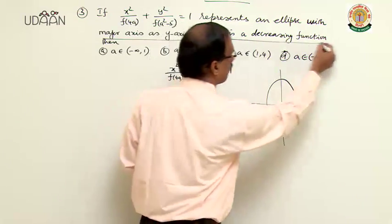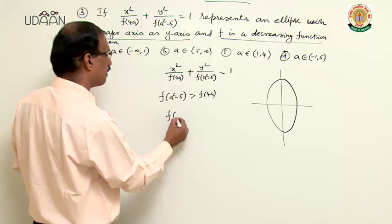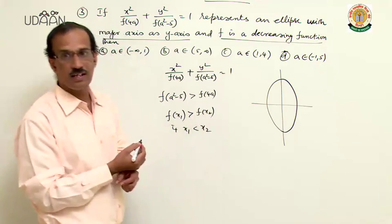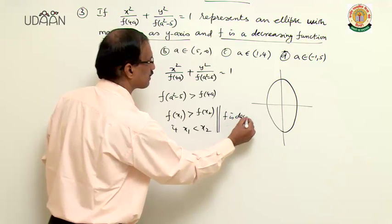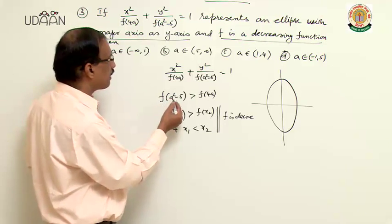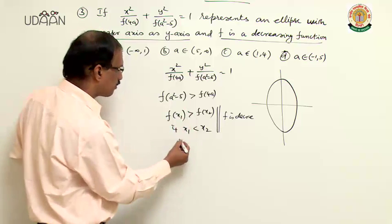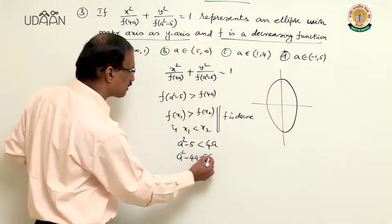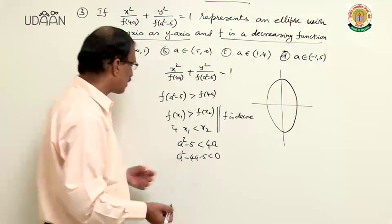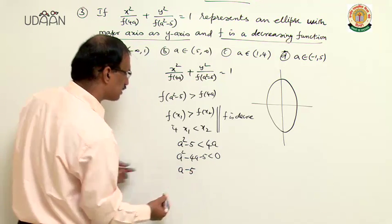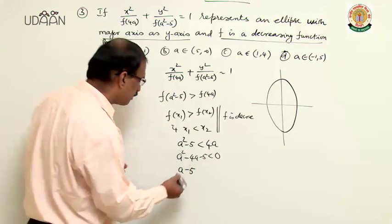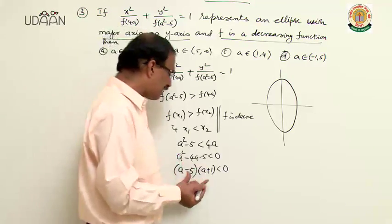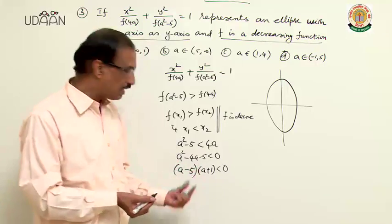Since f is a decreasing function, f(x₁) > f(x₂) implies x₁ < x₂. Therefore, f(a²-5) > f(4a) means a²-5 < 4a, which gives a²-4a-5 < 0. Factorizing: (a-5)(a+1) < 0.